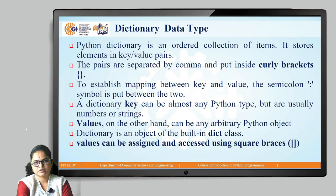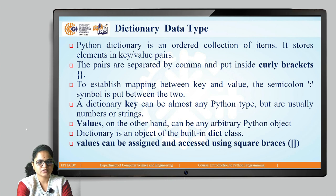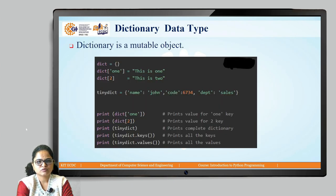The next is the mapping data type — dictionary. A Python dictionary is an ordered collection of items that stores elements in key-value pairs. The pairs are separated by comma and placed inside curly brackets. A colon is used as a separator to establish the mapping between key and value. A dictionary key can be almost any Python type, but usually we use numbers and strings. Values can be any arbitrary Python object. Dictionary is an object of the dict class, and dictionaries are mutable.